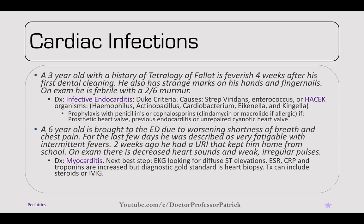A six-year-old presents with worsening shortness of breath, chest pain, and fatigue with intermittent fevers over the past few days. Two weeks ago he had a URI. On exam, there are decreased heart sounds and weak, irregular pulses — myocarditis. The next best step is EKG, looking for diffuse ST elevations for pericarditis. Order ESR, CRP, and troponins, which are often increased. The gold standard is a heart biopsy. Treatment can be steroids or IVIG. It is common after URIs or diarrheal illnesses.